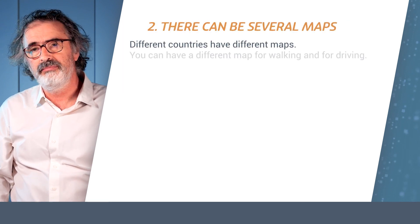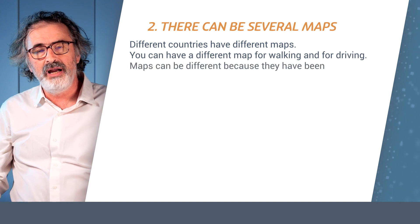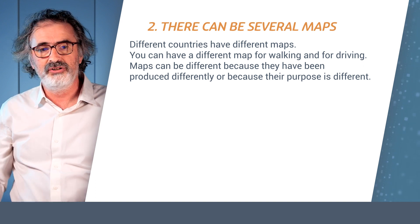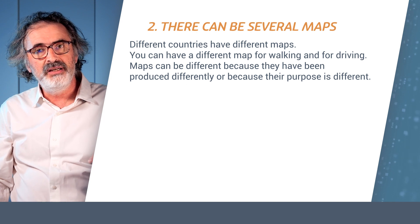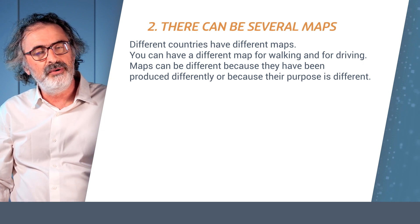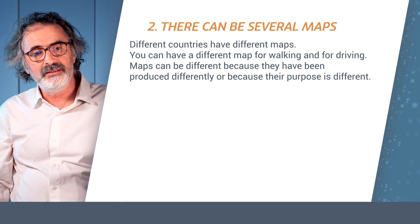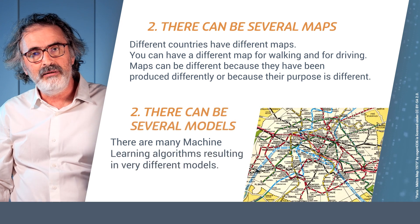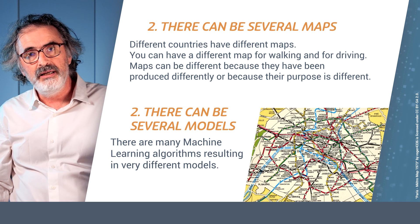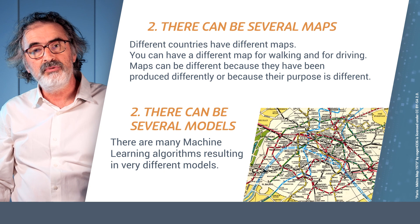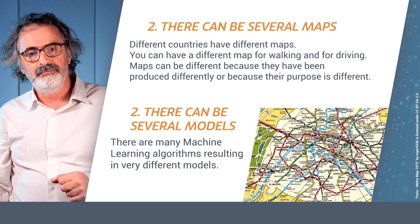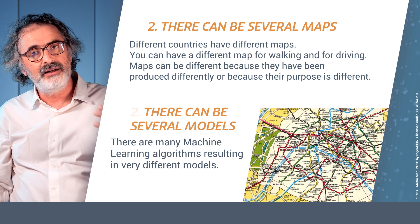The second thing we want to know about maps and models is that there can be various different maps. There are maps to drive a car, maps to go on your bicycle, maps at large scales and maps at smaller scales. Since there are different purposes, these maps have been tuned for each use case. The same works with models — if I want a model of what a student is, I may have a model predicting grades, or something more ambitious, and in each case I might use a different algorithm.